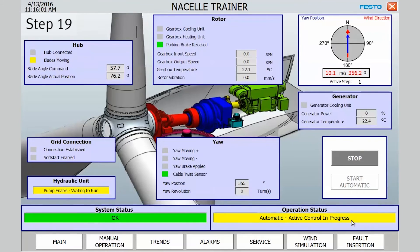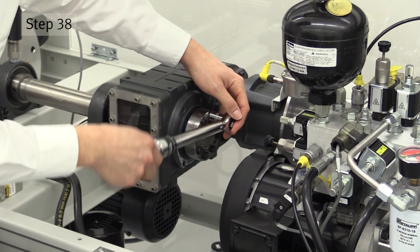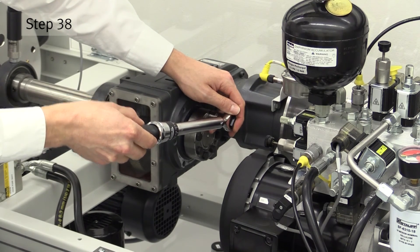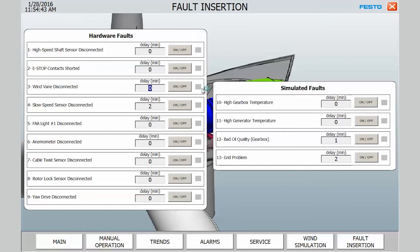Some steps focus on nacelle operation to give the learner a feeling of how a wind turbine behaves. Trainees practice basic maintenance operations done on real nacelles. Instructors can insert a variety of faults to develop the troubleshooting skills of the learner.